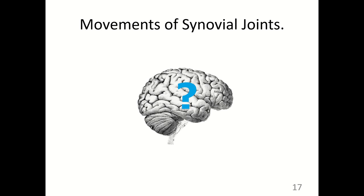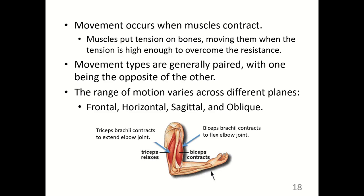Movement occurs when muscles contract. The bones act as levers, and when muscles put tension on the bones, they move when the tension is high enough to overcome the resistance. Movement types are generally paired with one being the opposite of the other — for example, flexion is paired with extension, as seen in the illustration where the biceps brachii contracts to flex the elbow and the triceps brachii contracts to extend the elbow. Range of motion varies across different planes: the frontal or coronal, the horizontal or transverse, the sagittal, and even the oblique planes.